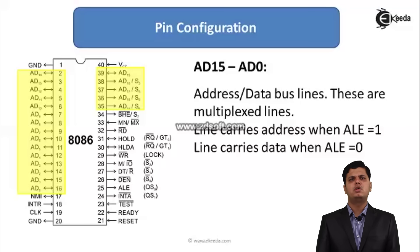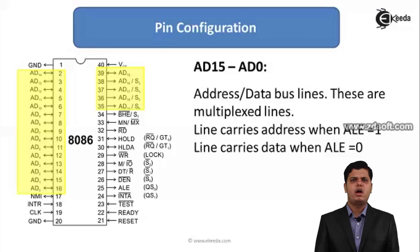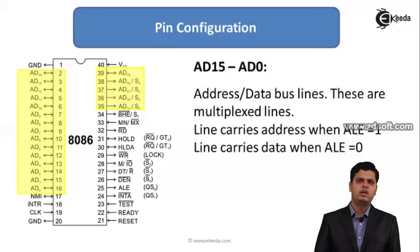For this purpose, there is one more pin called ALE — Address Latch Enable. Whenever the address latch enable is 1, this line carries the address, and when the address latch enable becomes 0, this line carries the data.